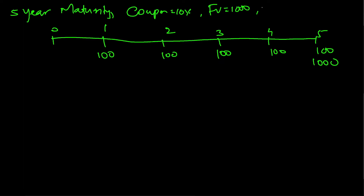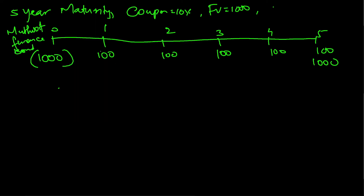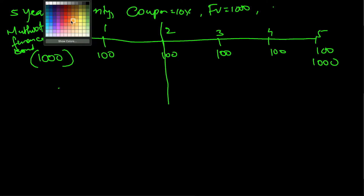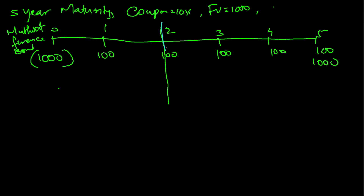You bought this bond for 1000. This is the Motud Finance bond example. Every year you are getting 100 out of this investment. Now imagine at the end of the second year something changes in the market.